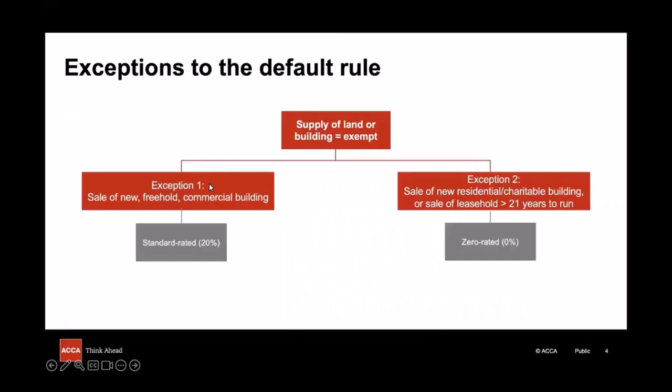There are two exceptions to this general rule. Firstly, the sale of a new freehold commercial building is actually standard rated, so that means we use the 20% VAT rate. Remember you are given that rate in the tax tables in your exam if you need it. By new we mean it is less than 3 years old.